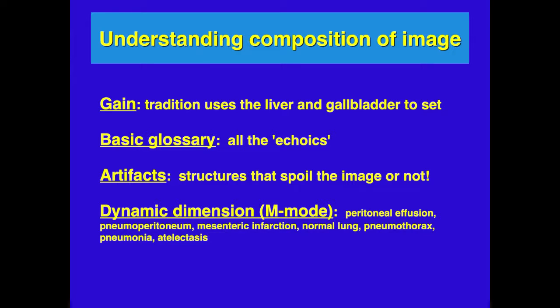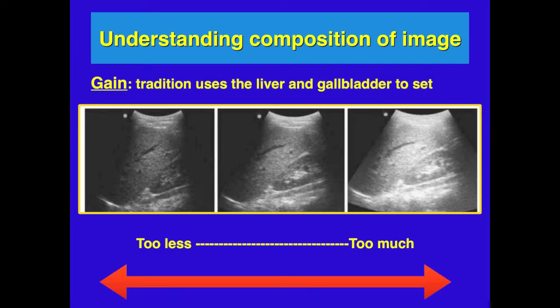We're going to go through the basic glossary — the echoics you may have heard in the past: hyperechoic, hypoechoic. Maybe you've seen ultrasound where it was too bright — that's called too much gain. Maybe you've seen it where it's too dark — that's called too little gain. What you see in the middle is optimal for liver and kidney. It takes a few tries to understand what optimal gain is. In most new machines, an Optimize button can help determine what's good and give you a general sense.